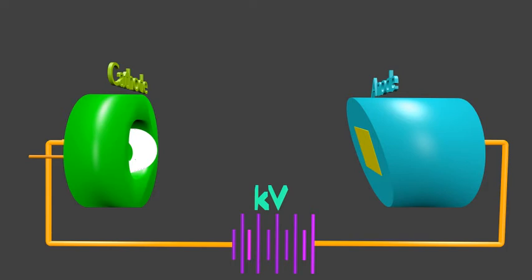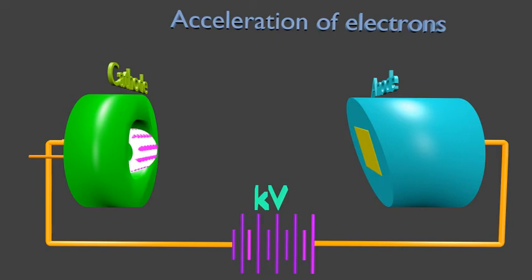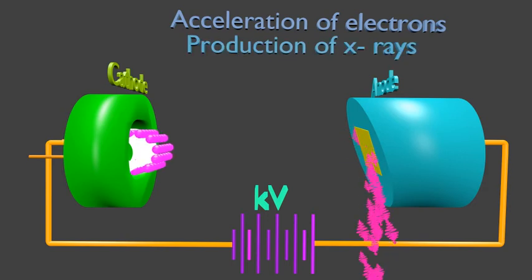The anode of X-ray tube is always kept at higher potential than cathode. Electrons being negatively charged particles are attracted towards higher potential, that is anode here. So electrons produced from filament move towards anode.